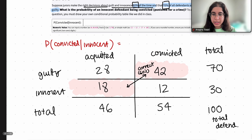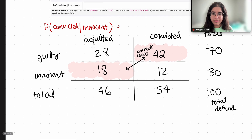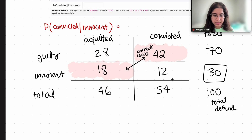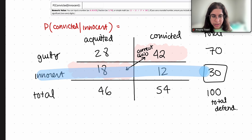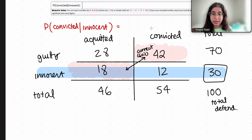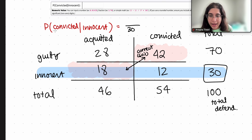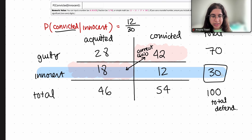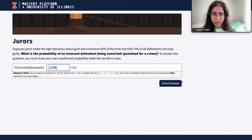Now we're finding the probability of convicted given innocent. Finding the actual probability is pretty easy with the table. We're dealing with the innocent row, since we're only looking at innocent people. Out of the 30 total innocent people, how many were convicted? That's 12. So our probability is 12 out of 30 — because out of those 30 innocent people, 12 were actually convicted. So our final answer is 12/30.